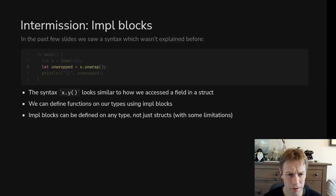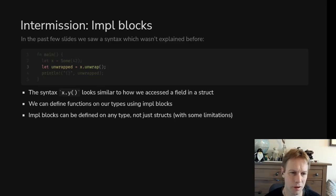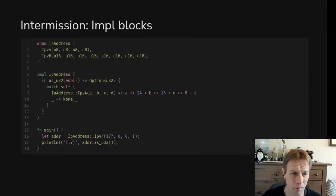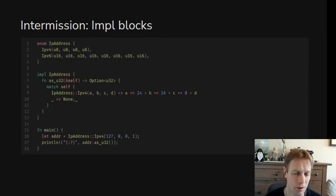In Rust you can define methods on your types — your struct types and also your enum types. Here is an example of an enum type and we're going to define a method on it.